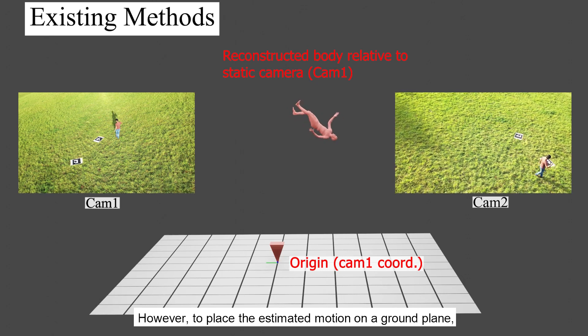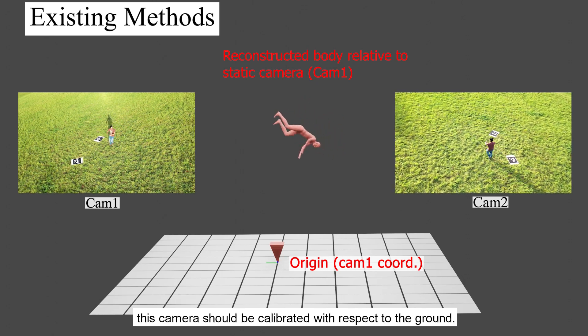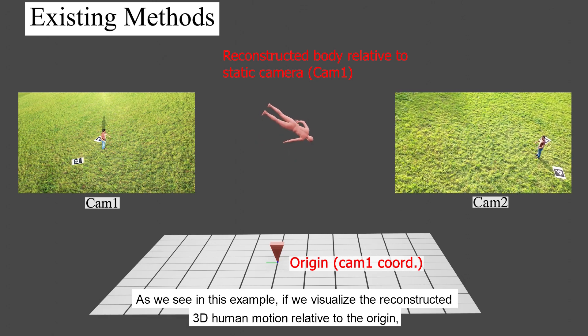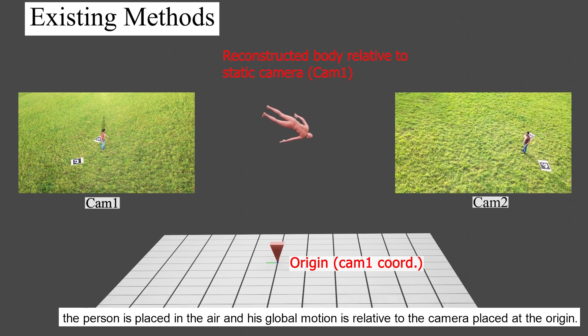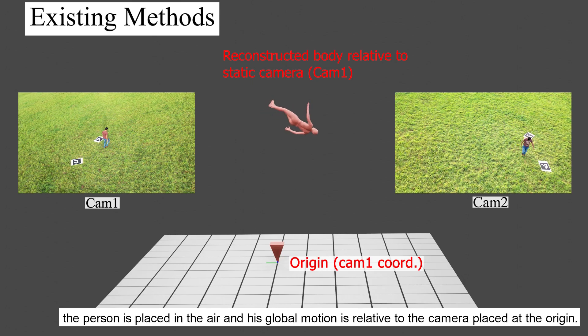However, to place the estimated motion on the ground plane, this camera should be calibrated with respect to the ground. As we see in this example, if we visualize the reconstructed 3D human motion relative to the origin, the person is placed in the air and his global motion is relative to the camera placed at the origin.